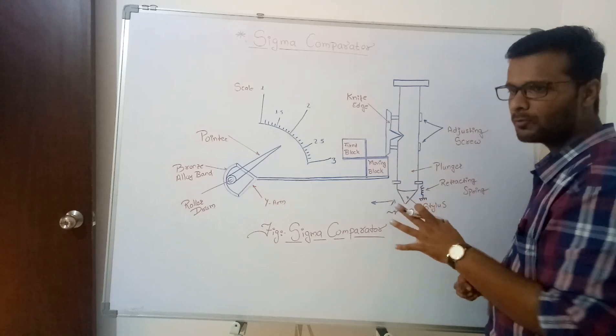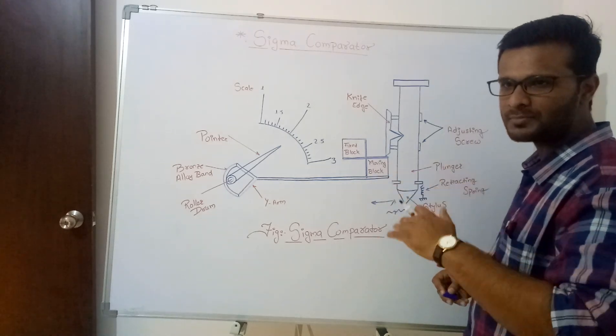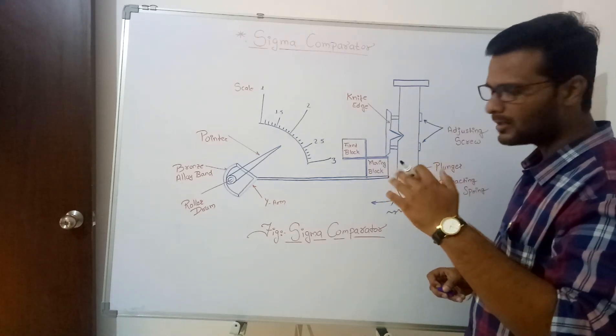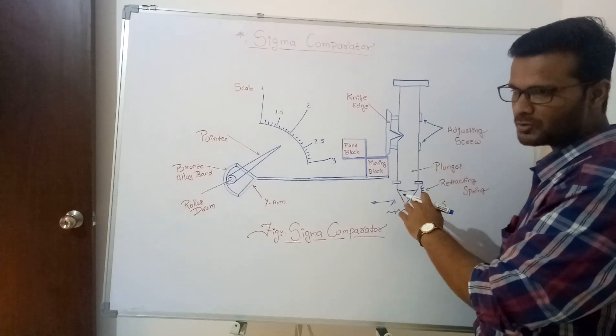Provided to the stylus. The stylus undergoes some ups and downs. What happens? Due to the reciprocating motion, the up and down motion of this stylus which is connected to plunger.